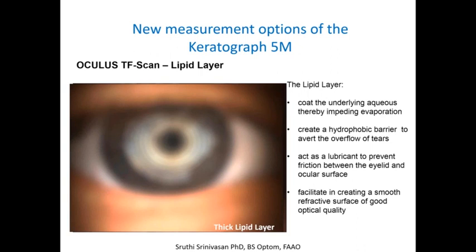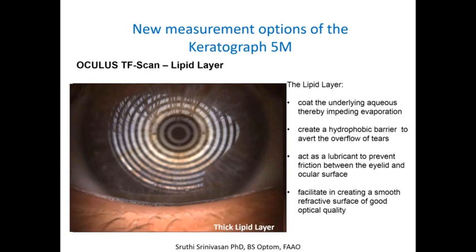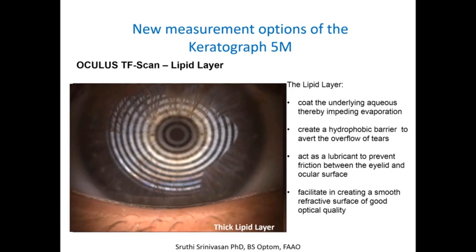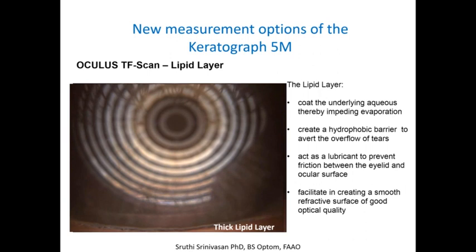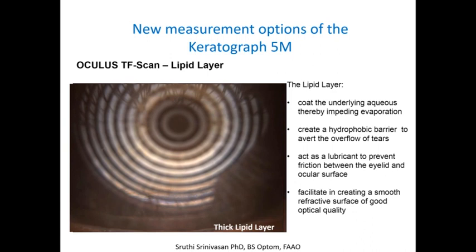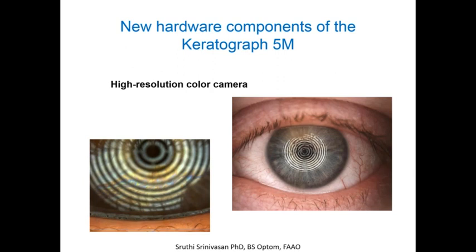As already mentioned, there are different functions the lipid layer offers. The main function is preventing the underlying layers from evaporation, and also acting as lubricant to prevent friction between the eyelids and the ocular surface. It provides a smooth refractive surface for good optical quality.